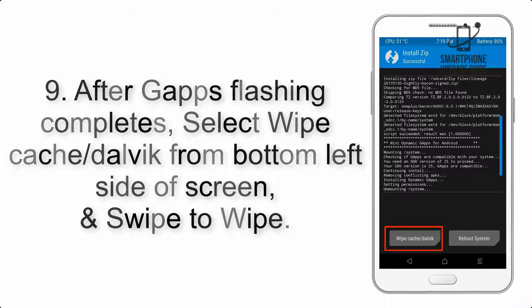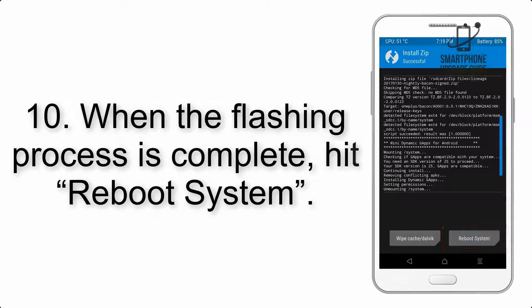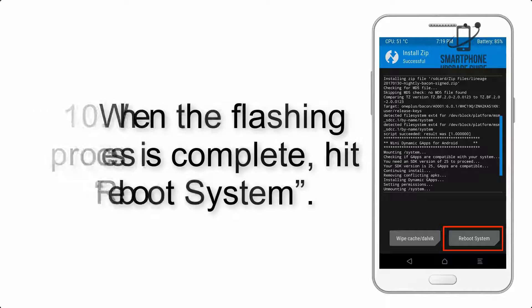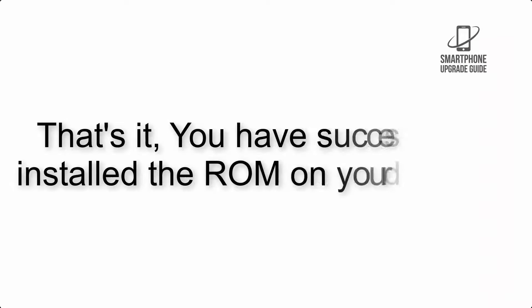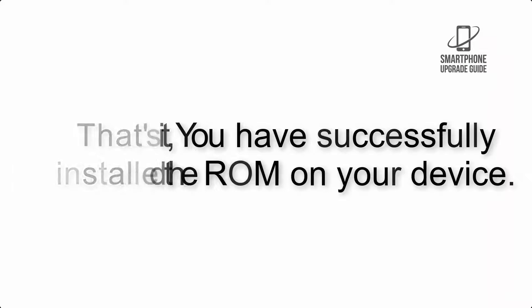Step 9: After gapps flashing completes, select Wipe Cache and Dalvik from the bottom left side of the screen and swipe to wipe. Step 10: When the flashing process is complete, hit Reboot System. That's it — you have successfully installed the ROM on your device.